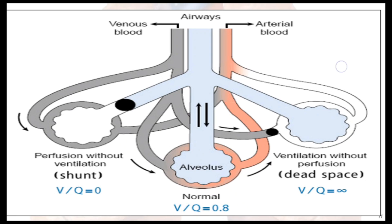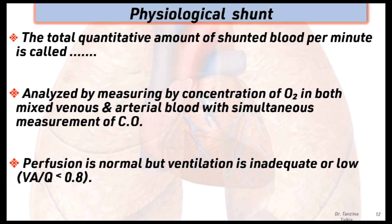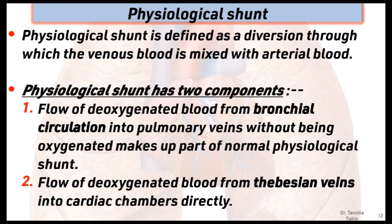The total quantitative amount of shunted blood per minute is called physiological shunt. Physiological shunt is analyzed by measuring the concentration of oxygen in both mixed venous and arterial blood with simultaneous measurement of cardiac output. In physiological shunt, perfusion is normal but ventilation is inadequate or low.